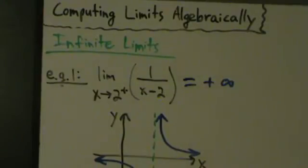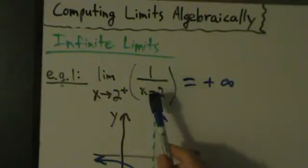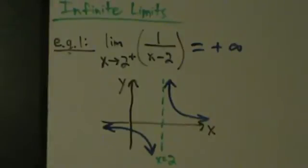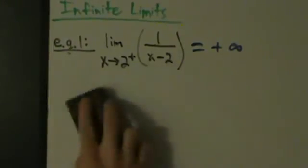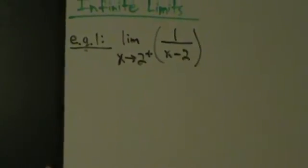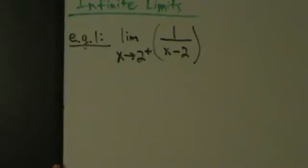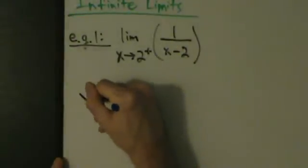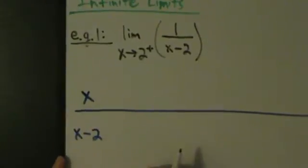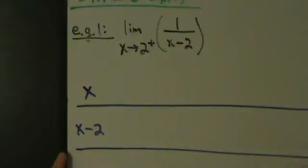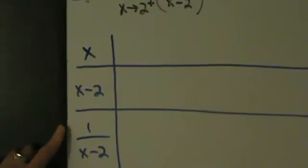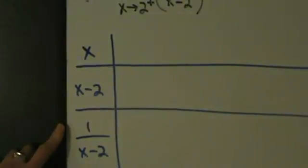But how do we show that algebraically? If you're dealing with a function that's not as simple as this, or if you don't have access to a graphing calculator, you'll need to know how to do this algebraically. So let's set up a table. This table will have three rows: the first row has x values, the second has values of x minus 2, and the third has values of 1 over (x minus 2). The second row isn't strictly necessary but it helps make the pattern clearer.